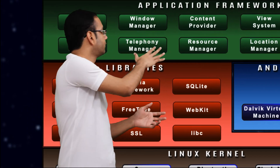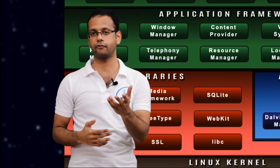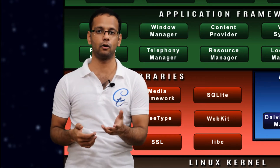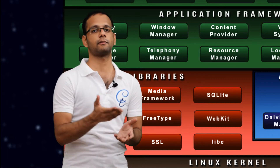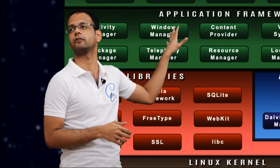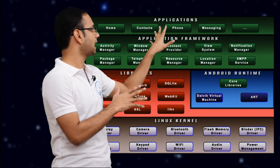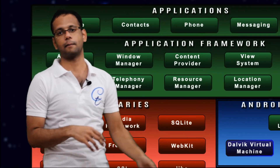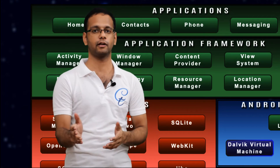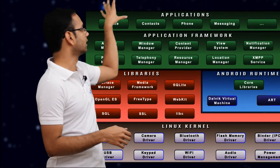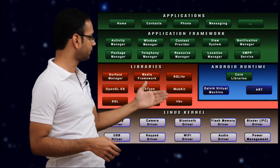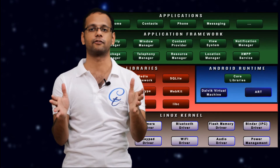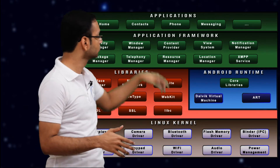We have the telephony manager, which handles all your call-related services — whether you dial a call, put a call on hold, or call the lower-level GSM stack. All these things are managed by the telephony manager. So this is a glance at the application framework written in Java. Above that, we have all the Android applications — whether provided by your OEM or written by you. So we have a complete stack, a group of components placed one above the other. That's why we call it a complete software stack, starting from the firmware to the application level.